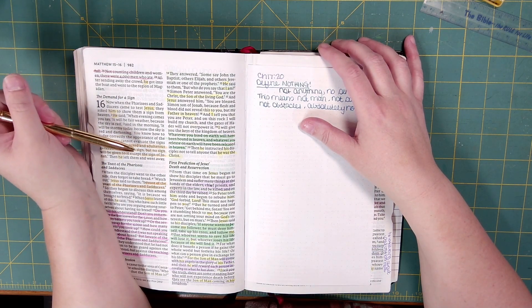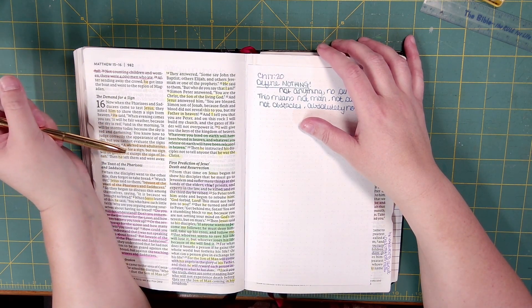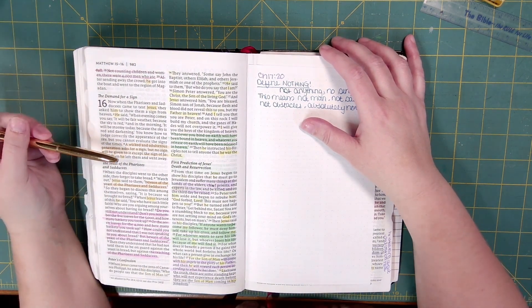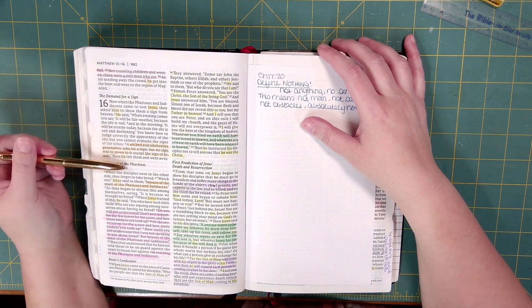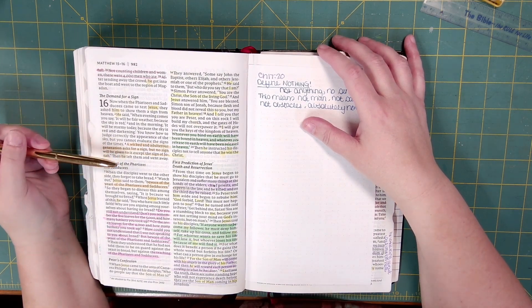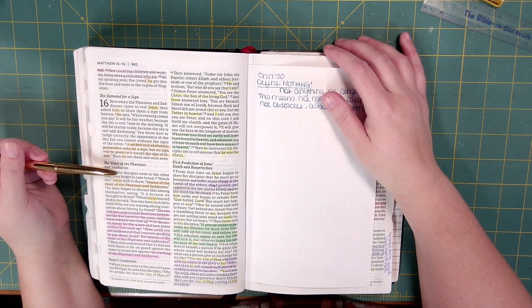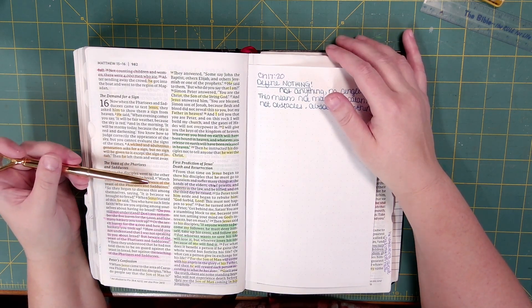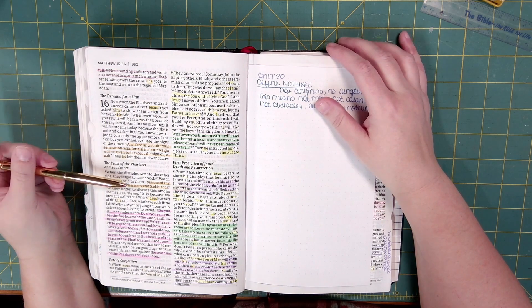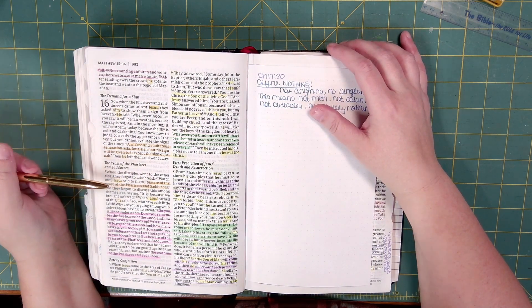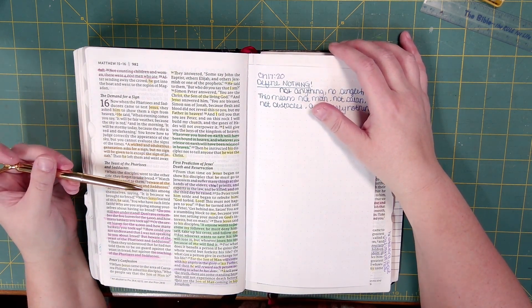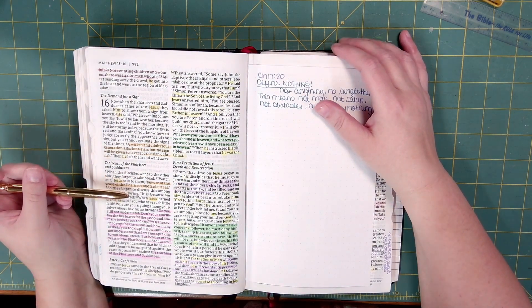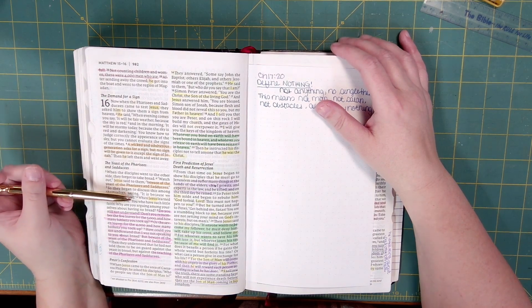A wicked and adulterous generation asks for a sign, but no sign will be given to it except the sign of Jonah. Then he left them and went away. When the disciples went to the other side, they forgot to take bread. Watch out, Jesus said to them. Beware of the yeast of the Pharisees and Sadducees. So they began to discuss this among themselves, saying, It is because we brought no bread.